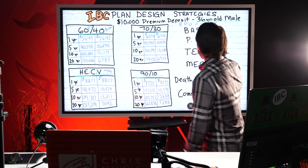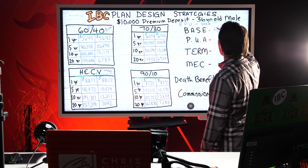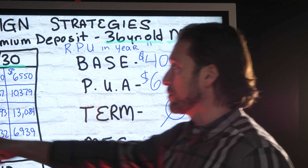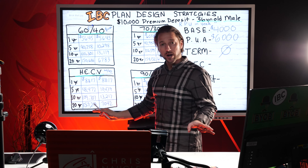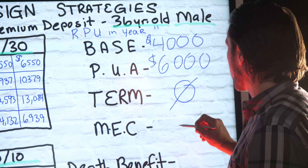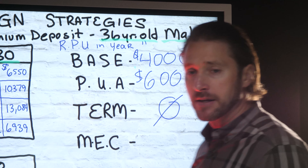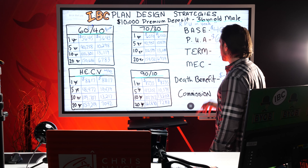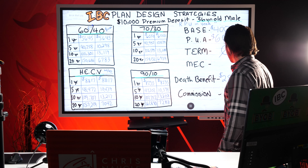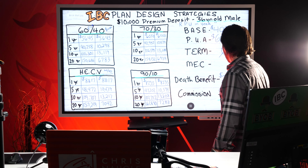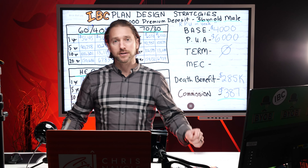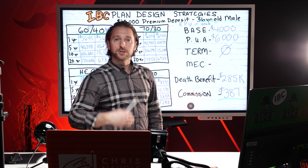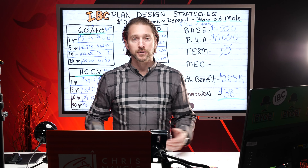So in the HEC-V, we've got $4,000 of the $10,000 going to the base and $6,000 going to paid-up additions. We have zero term because in the 60-40 we didn't need any. No extra drag, no extra lost efficiency. The MEC guidelines are met using just the 60-40 design. The death benefit on this one is the lowest at $285,000, so if you're doing this as a legacy play, this is your worst option. But the commission for the advisor on this one is about $387 for a $10,000 premium — much less. Each design has progressively reduced the advisor's commission, which means you have more money.